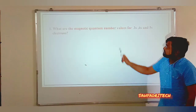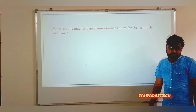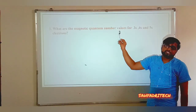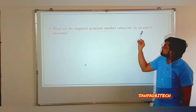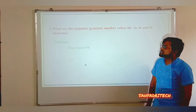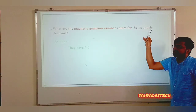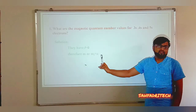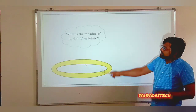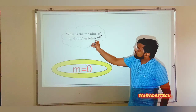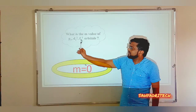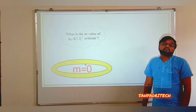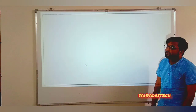For example, what are the magnetic quantum number values for 3s, 4s, and 5s electrons? For any s subshell, L = 0, so ML = 0. Another example: what is the M value for the Pz, Dz², and Fz³ orbitals? Since any z orbital always corresponds to M = 0, the answer is M = 0 for all three.